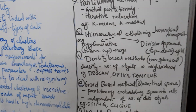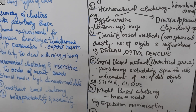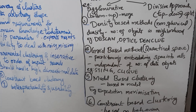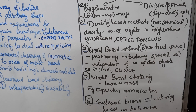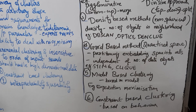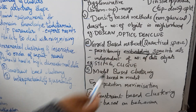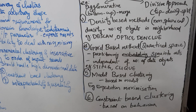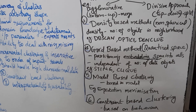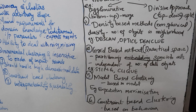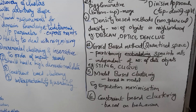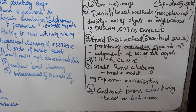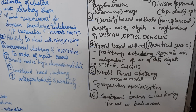Then grid-based methods: the quantized space is divided into different cells or grids. This approach is independent of the number of data objects; instead, it deals with the space embedded in the grid. Examples include STING and CLIQUE. Then model-based clustering: we make a model, and based on this model, the clustering or grouping is done. An example is the Expectation-Maximization (EM) technique. Then constraint-based clustering, which is based on behavior and constraints, allowing us to divide the data into different clusters.